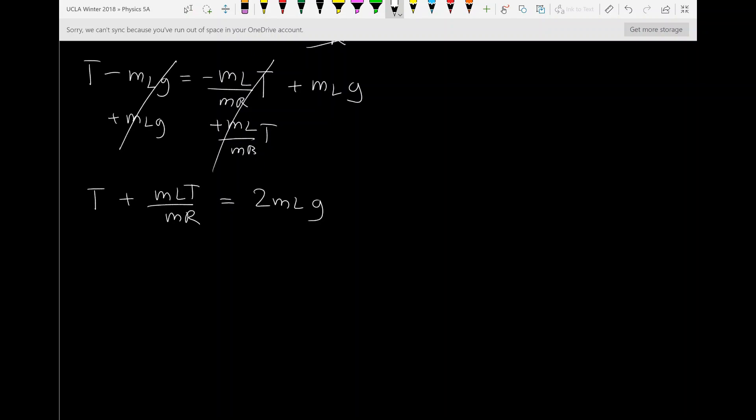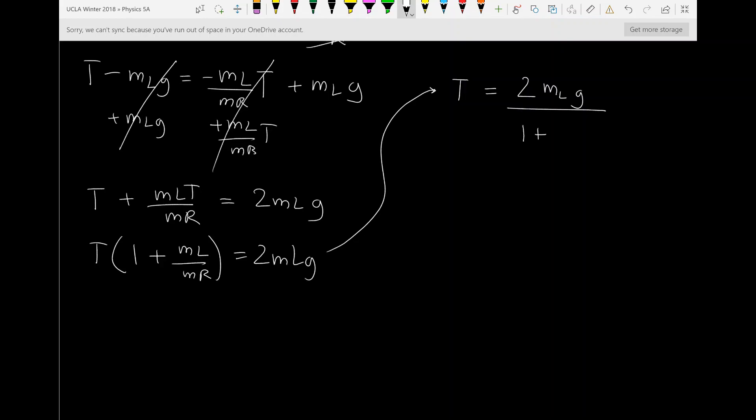This is probably the trickiest part in the math. I'm going to factor out a T. And if I do that, I can get T times one plus ML divided by MR is equal to 2 ML G. And just to save some space, I'm just going to write T is equal to 2 ML G over 1 plus ML over MR. And that's that.